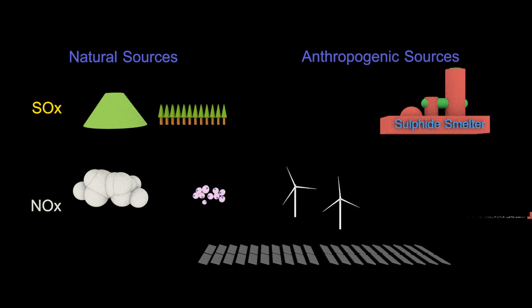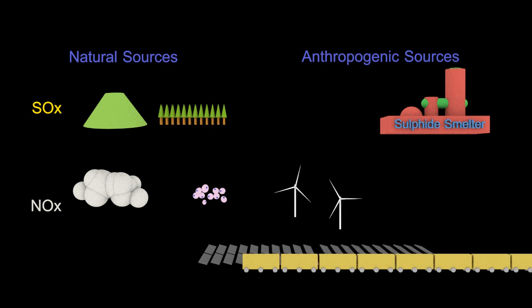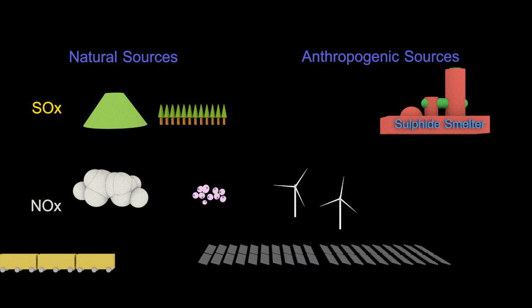Cars produce nitrogen oxides but don't produce sulfur oxides. Take the train instead of the car, public transport, and finally don't forget planes producing nitrogen oxides.